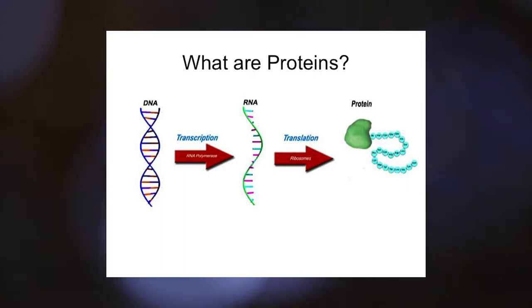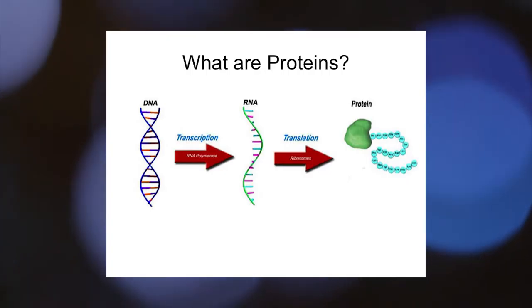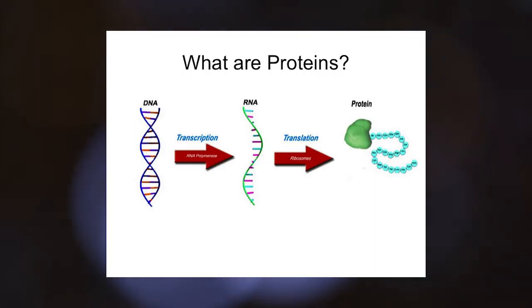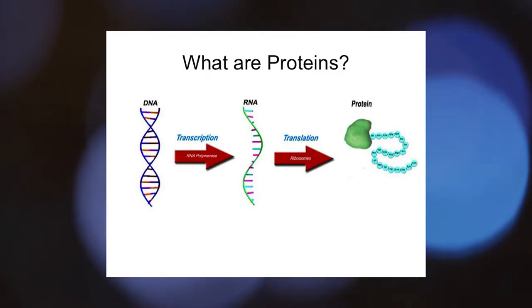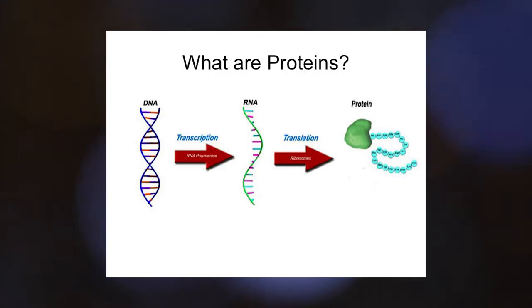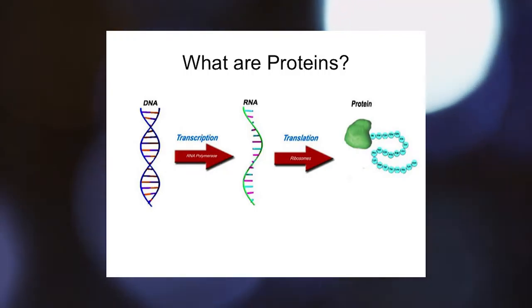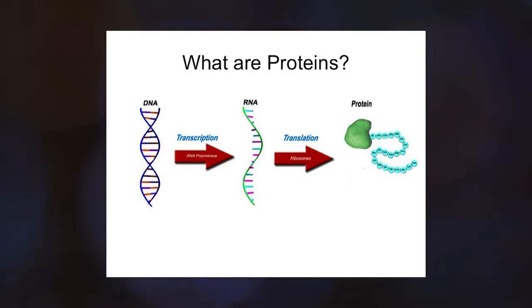Here is a simple diagram of what we call the central dogma in biology. DNA is our blueprint for proteins. We go from DNA — it's a blueprint — converted by a process called transcription into RNA, which is just a message. Then that message is converted into protein through a process called translation, using RNA and proteins called ribosomes.